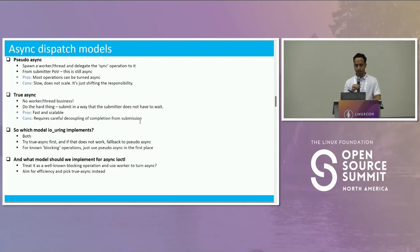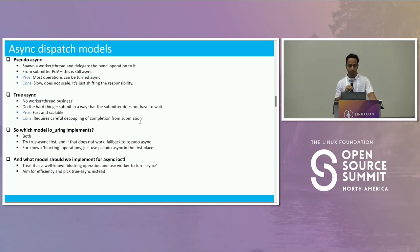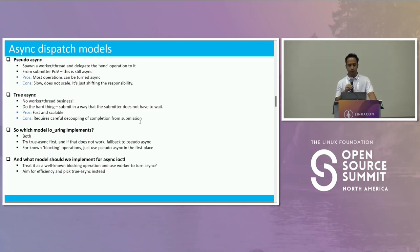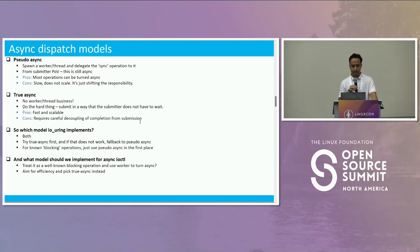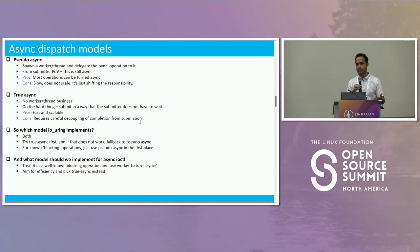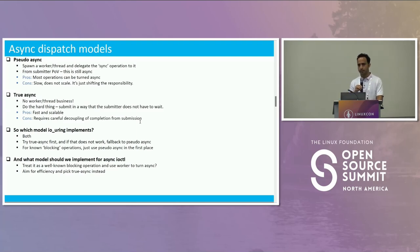Which model does io_uring implement? The answer is both. The first one — pseudo-async — is not the default mode. io_uring tries to do true-async first, and if that doesn't work in some situation, it can fall back to pseudo-async. For known blocking operations, like fsync or mkdir, right from the beginning it's going to use a worker thread to execute that operation.